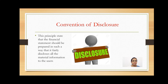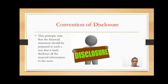The next is the Convention of Disclosure. This principle states that the financial statement should be prepared in such a way that it fairly discloses all material information to the users. Users of financial statements include shareholders, stakeholders, investors, creditors, customers, and even the government — they use the financial statement to know the financial position of the business. Hence, this convention says it is very important to disclose all information relating to the business in the financial statement.